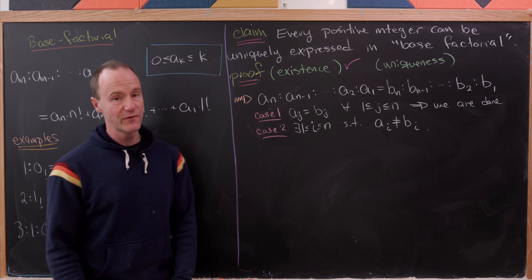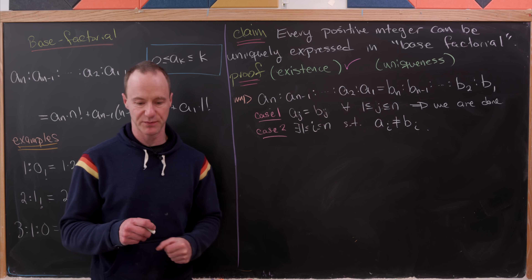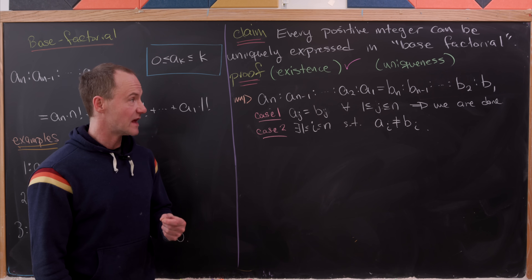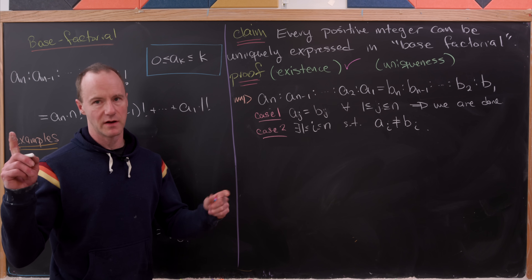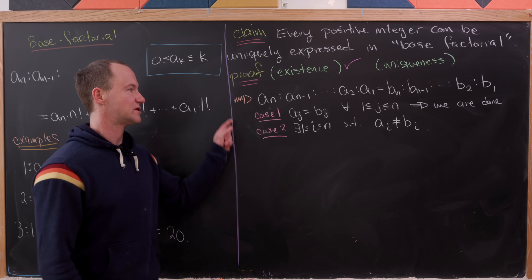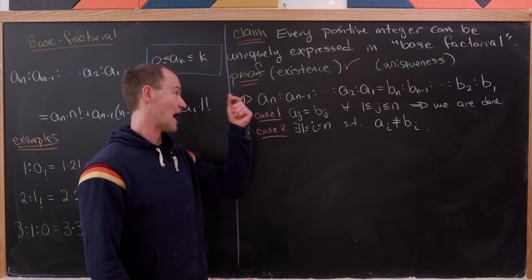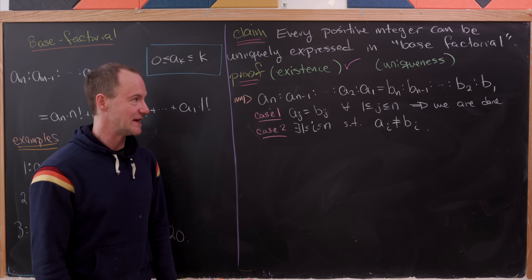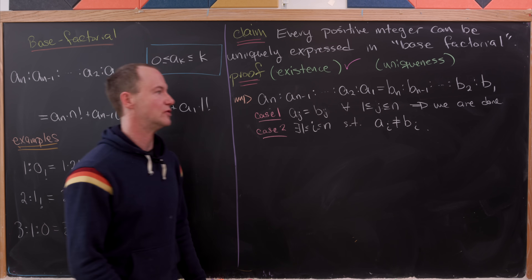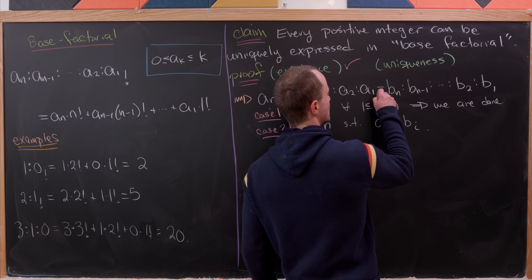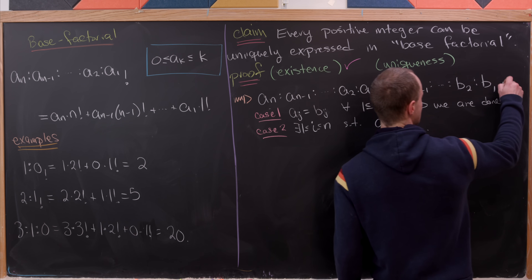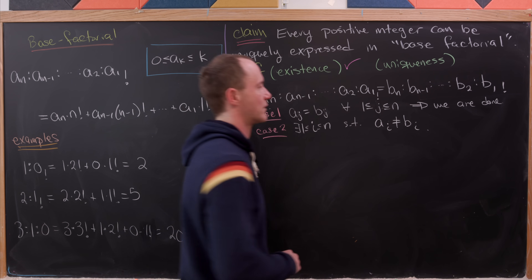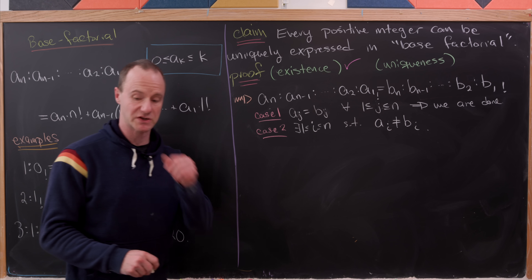We proved that if we had two expressions for a natural number in base factorial, then they had to have the same number of digits. So we have (a_n : a_{n-1} : ... : a_2 : a_1) sub factorial equal to (b_n : b_{n-1} : ... : b_2 : b_1) sub factorial, keeping in mind our definition of that factorial expansion. We'll now break this into two cases.